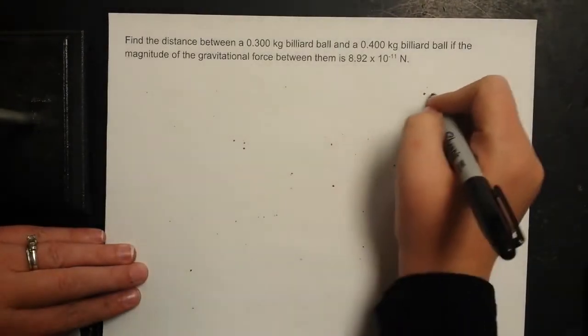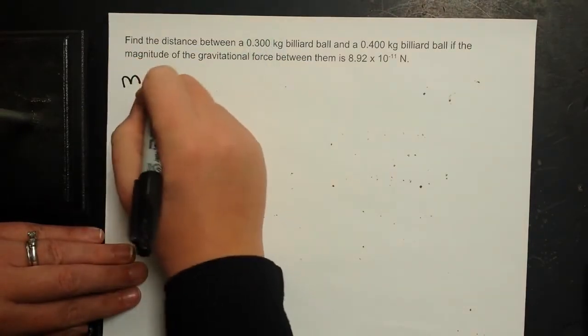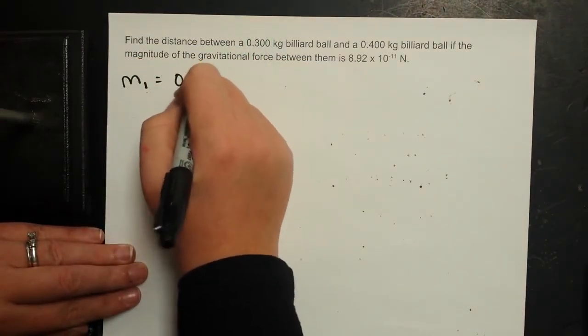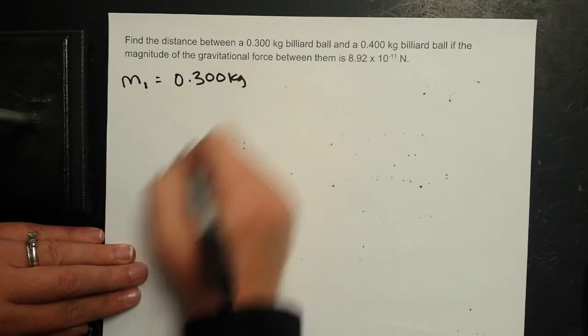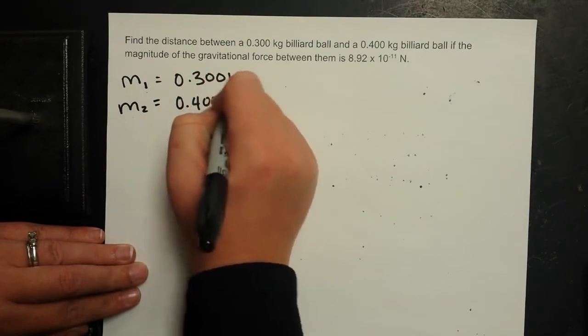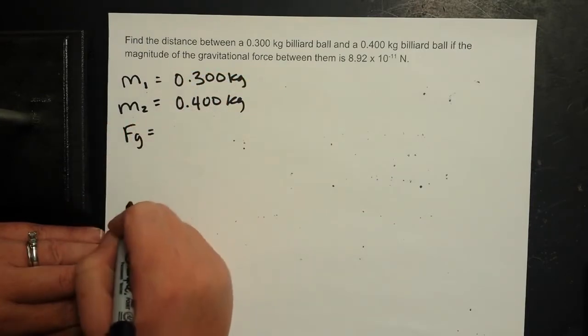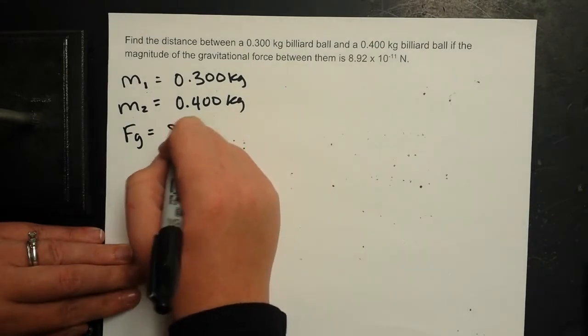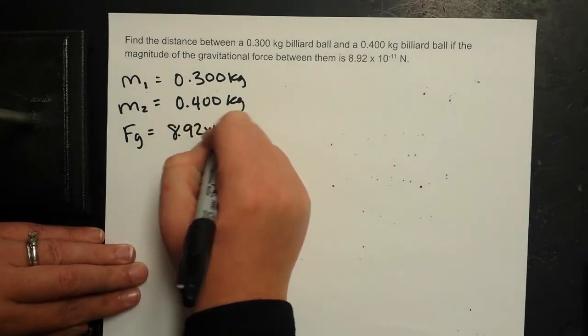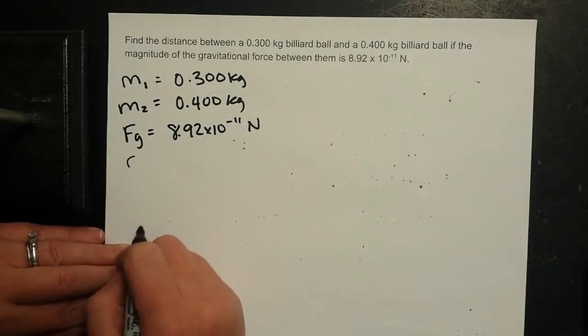So we've got two billiard balls. The mass of my first billiard ball is 0.3 kilograms. The mass of my second billiard ball is 0.4 kilograms. My gravitational force between the two of them is 8.92 times 10 to the negative 11th newtons. And I'm looking for the distance between them.